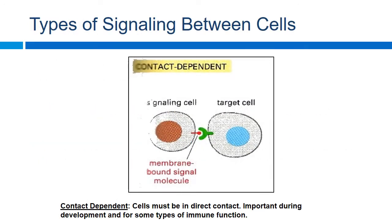One way we can do cell signaling is contact dependent — cells basically touching directly in contact with one another. You see this a lot with the immune system. It's how immune cells detect whether cells coming into contact are self or foreign. For example, a T cell comes up and binds with a bacteria and says this doesn't match any of my receptor sites, let's try to destroy this. So that would be contact dependent cell signaling, and you notice the receptor and usually a membrane-bound signal molecule located within the cell membrane.